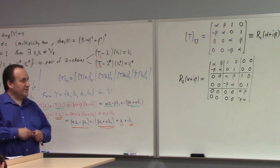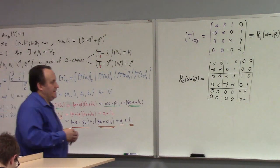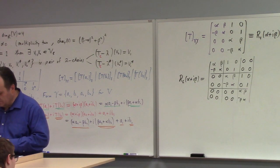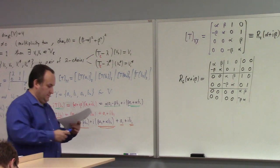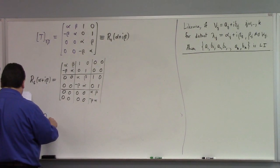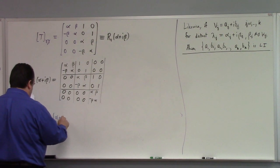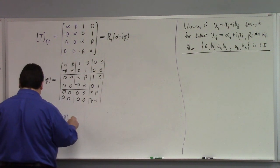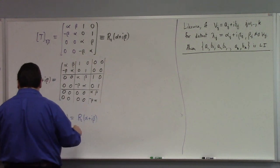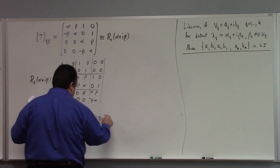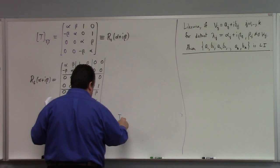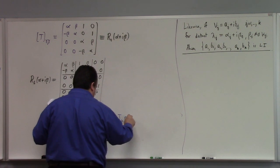There's a way of capturing these formulas more elegantly using something called the tensor product. We can write R_{2k}(alpha plus i beta) as R2(alpha plus i beta) tensor with the k-by-k identity matrix, plus the k-by-k identity matrix tensor with the nilpotent element of order k.